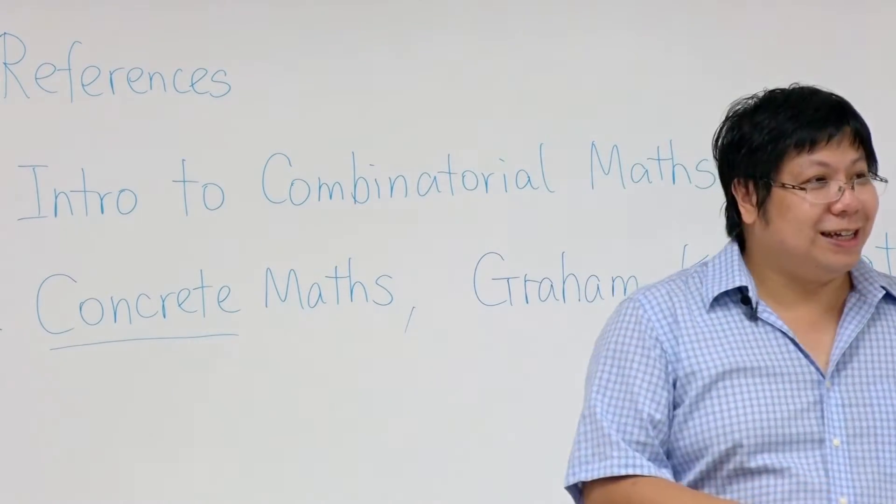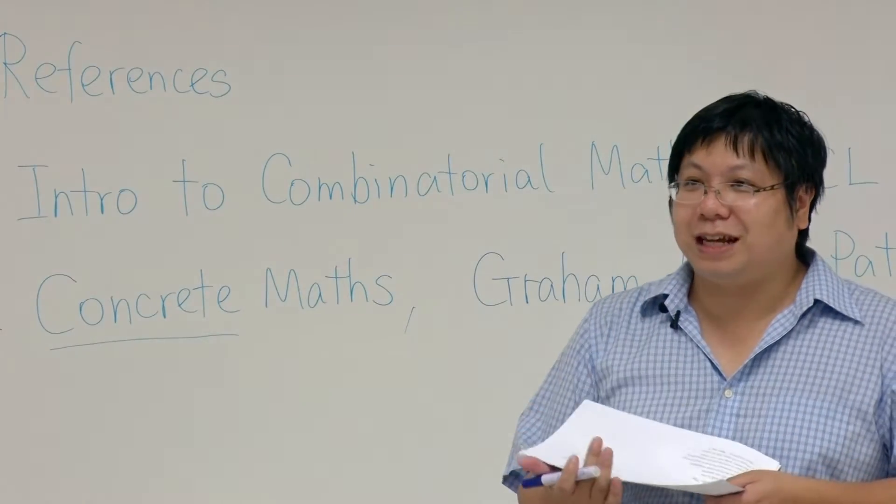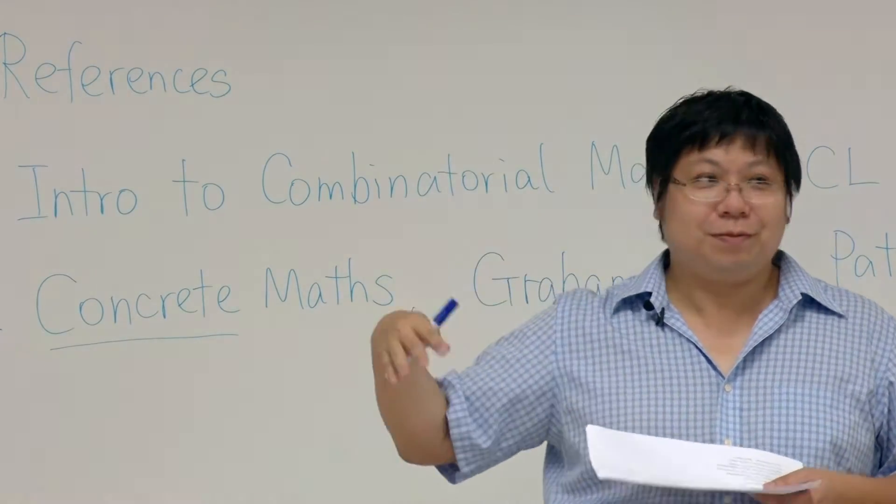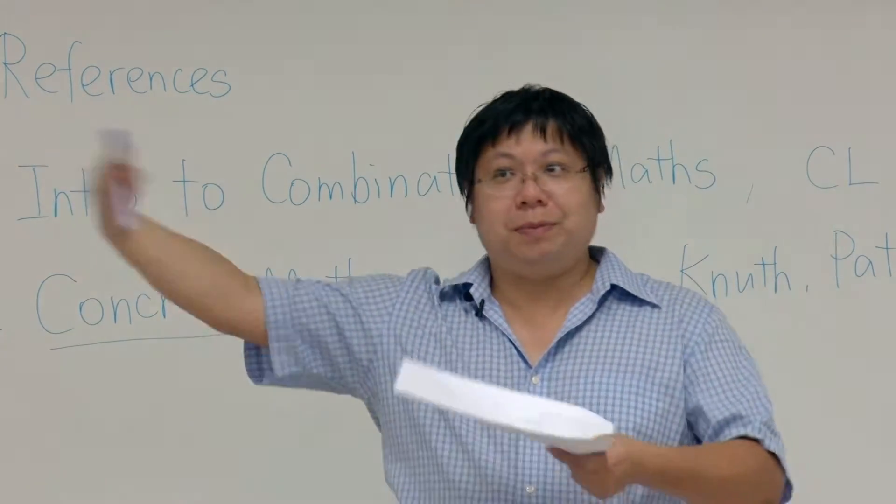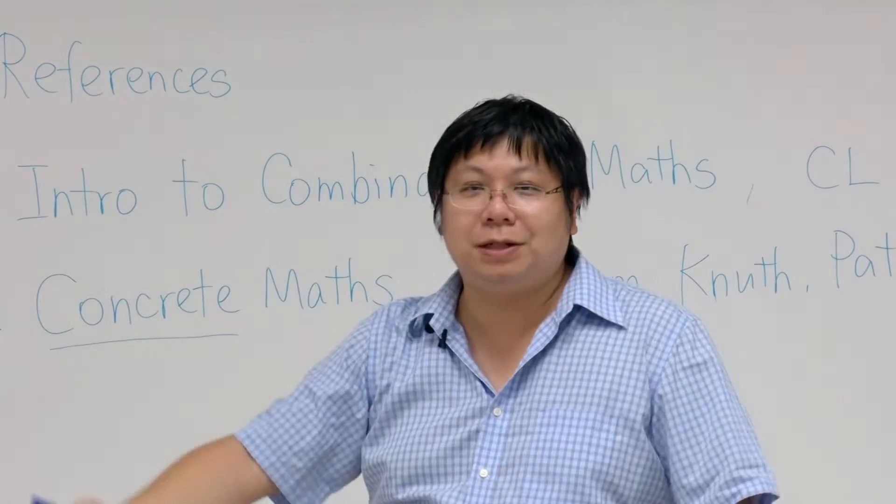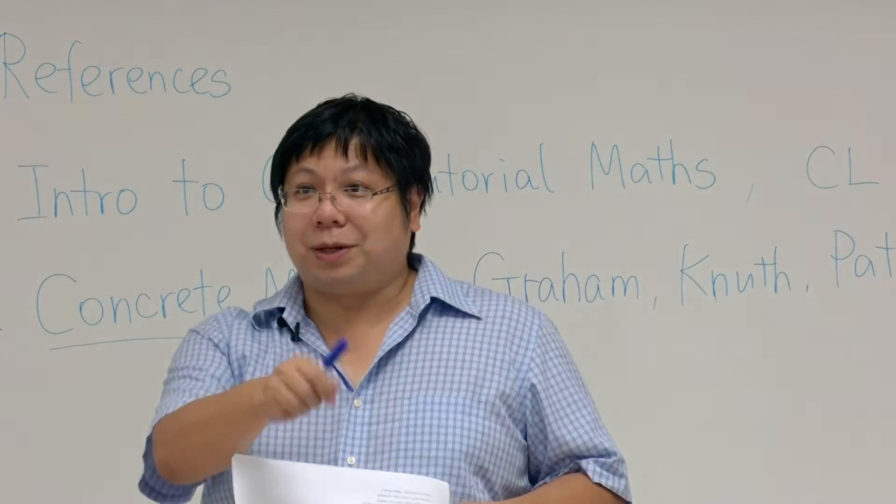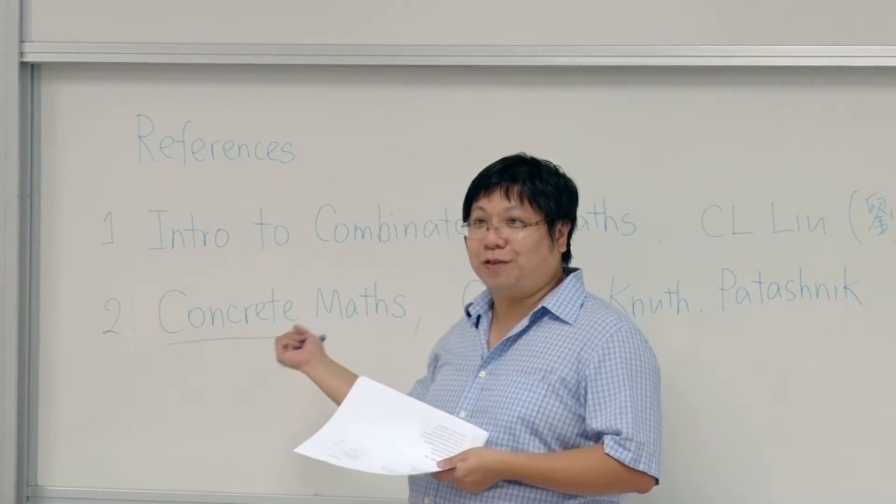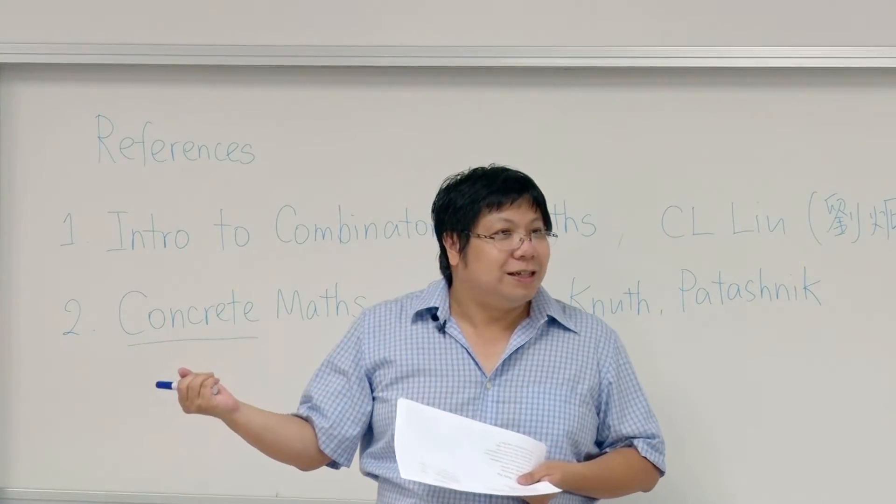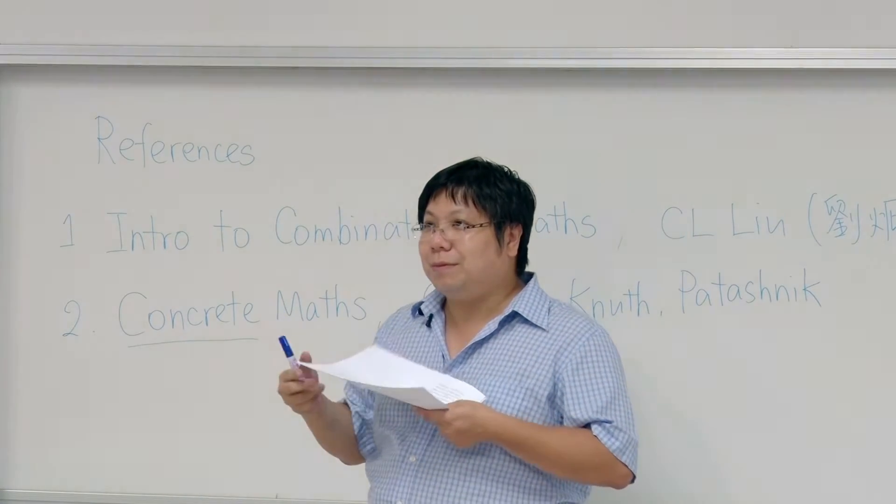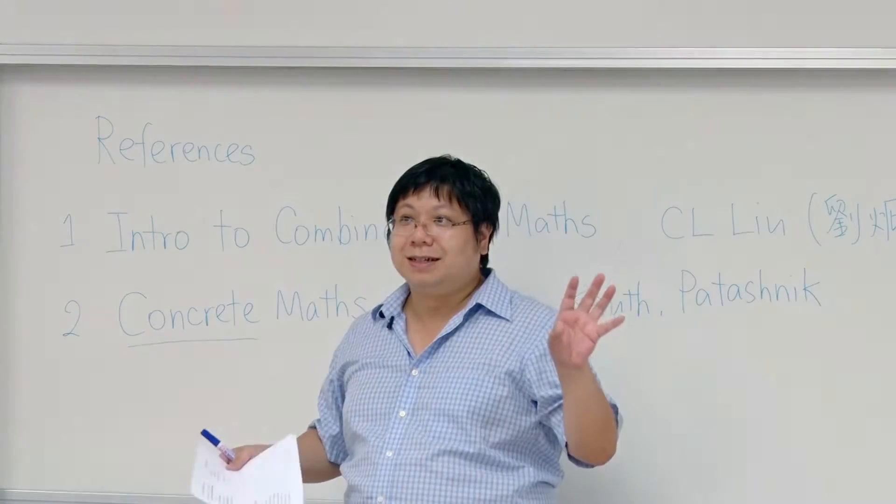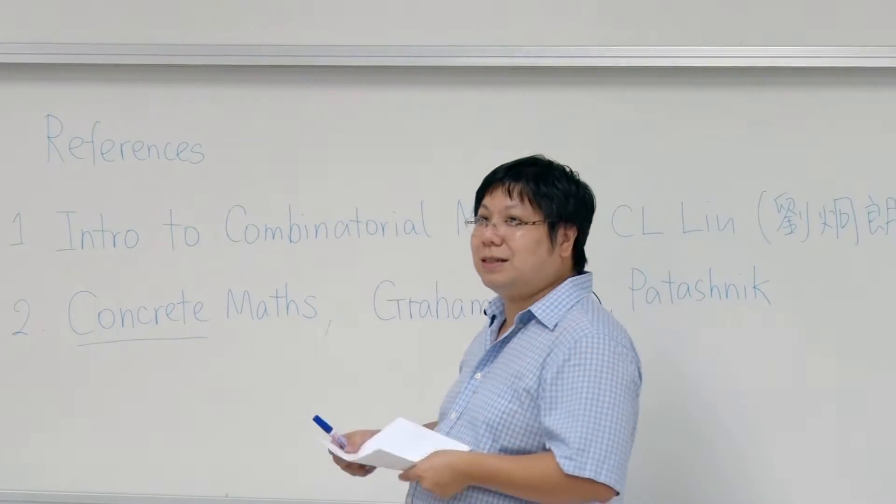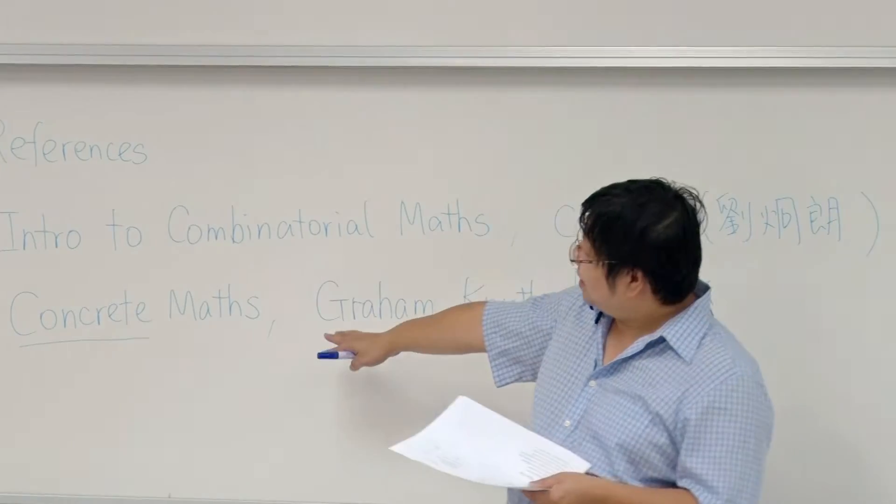So it actually talks about discrete mathematics, but it uses continuous technique to solve it. It's difficult to imagine, but when you are doing summation of one plus two plus three plus four plus five, one to n, these are discrete objects, but you use continuous method to solve this.